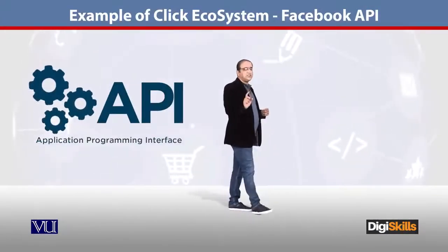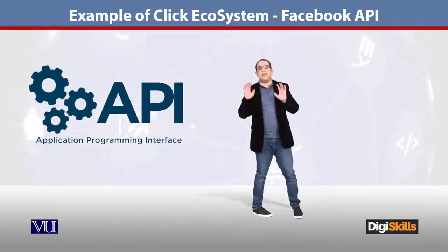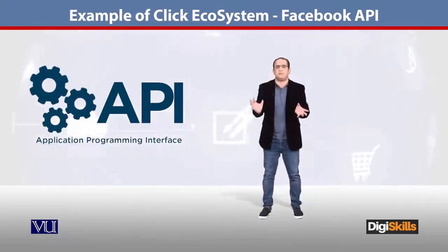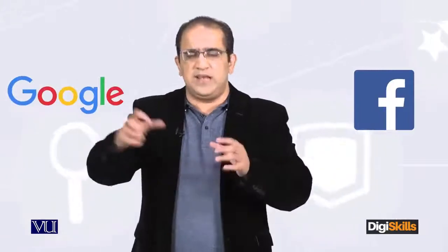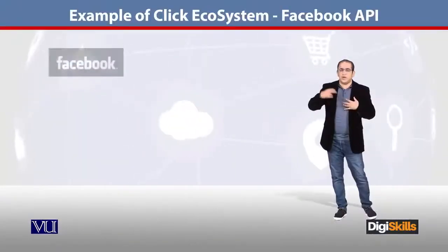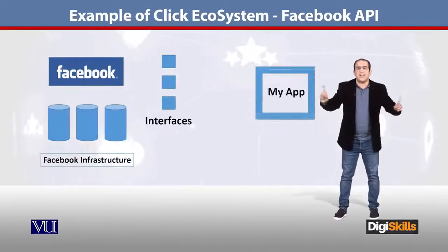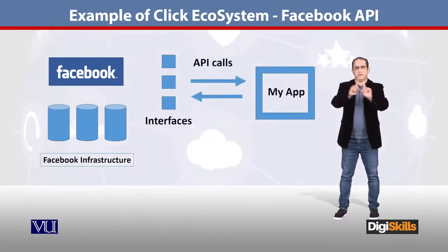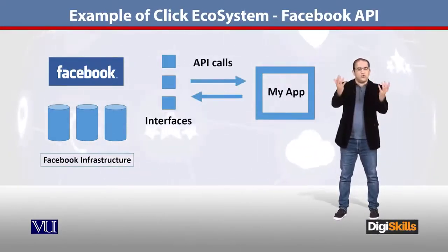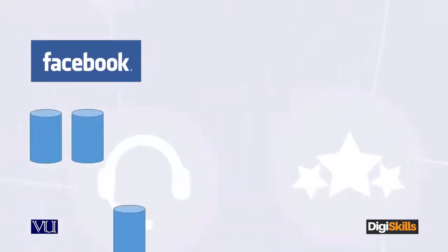API means Application Programming Interface. The work is very simple. There are some data on Facebook — clicks. There are some data on Google. There are some data on their click ecosystem. And there are some apps. So API is actually a bridge to exchange data.